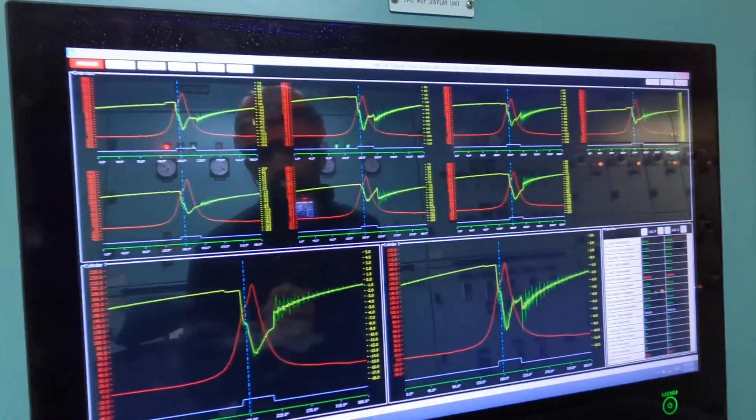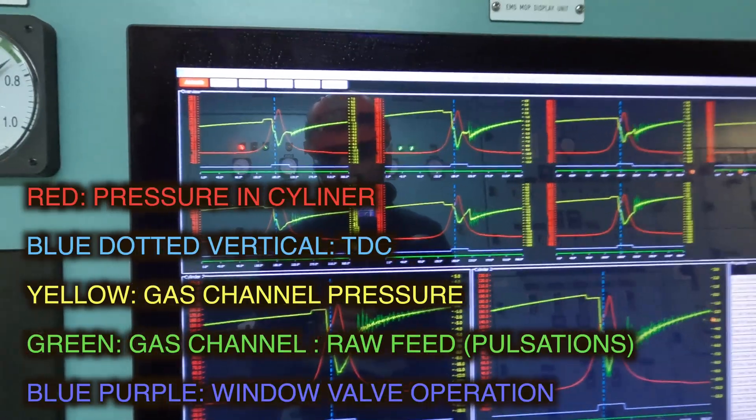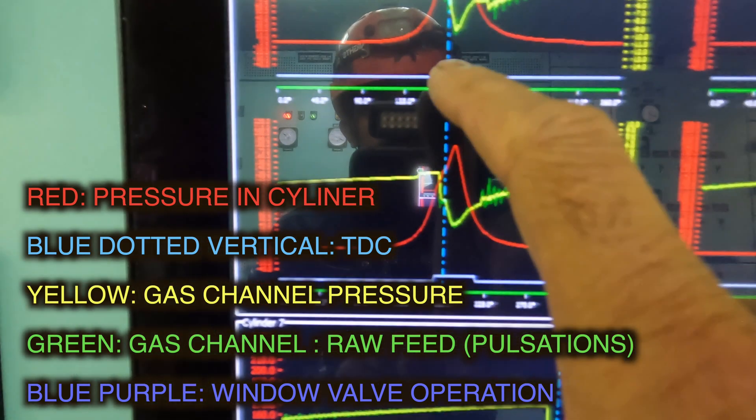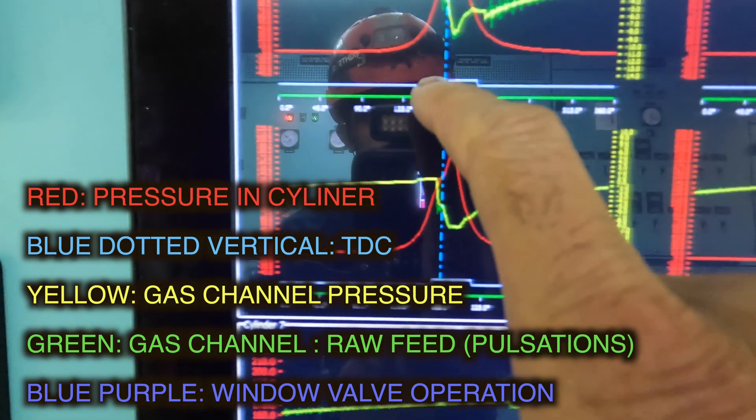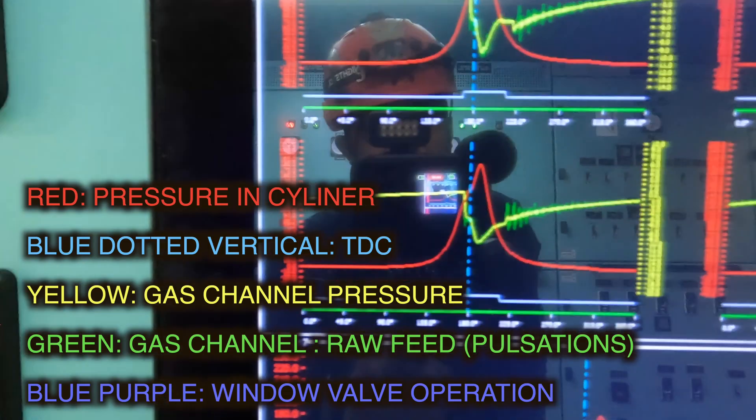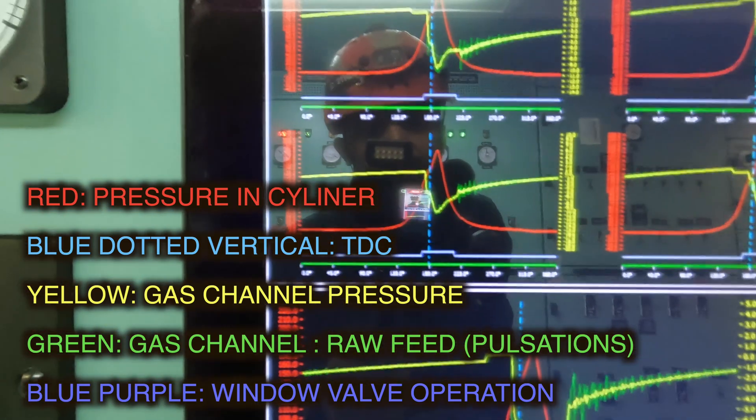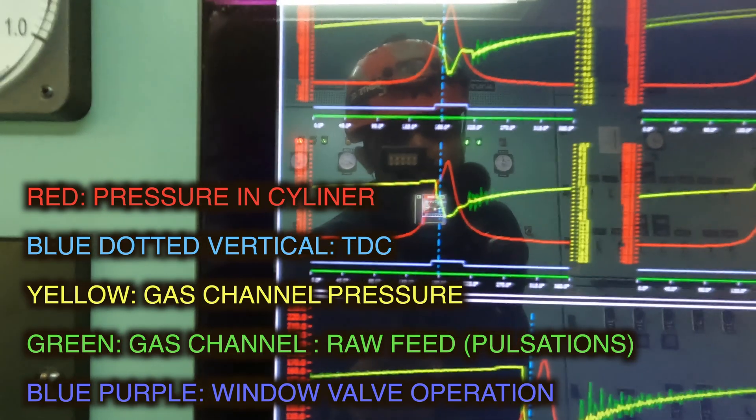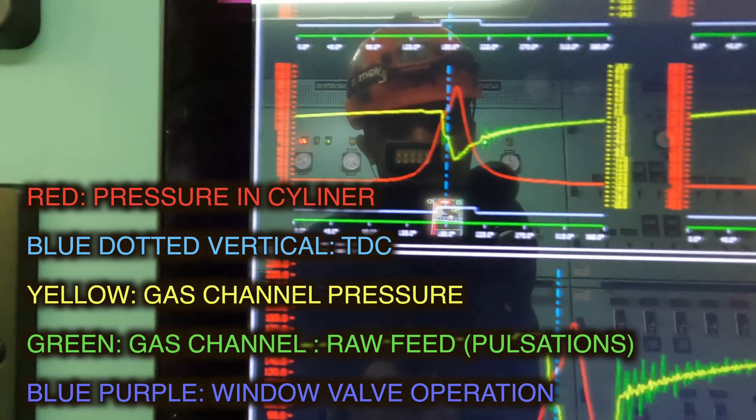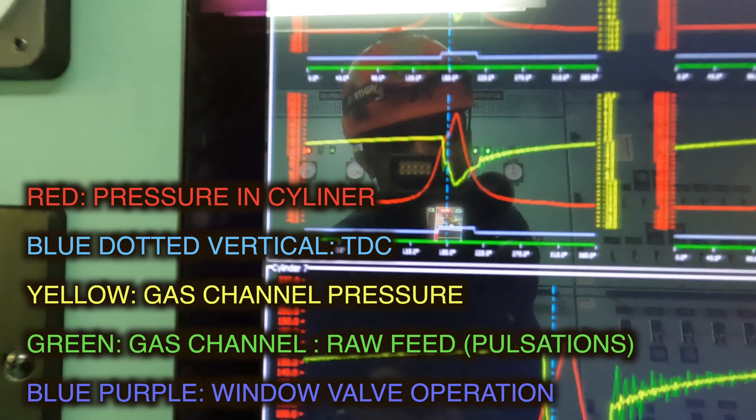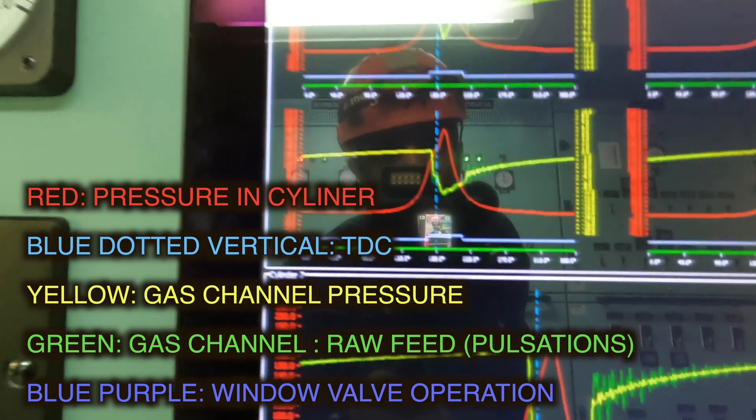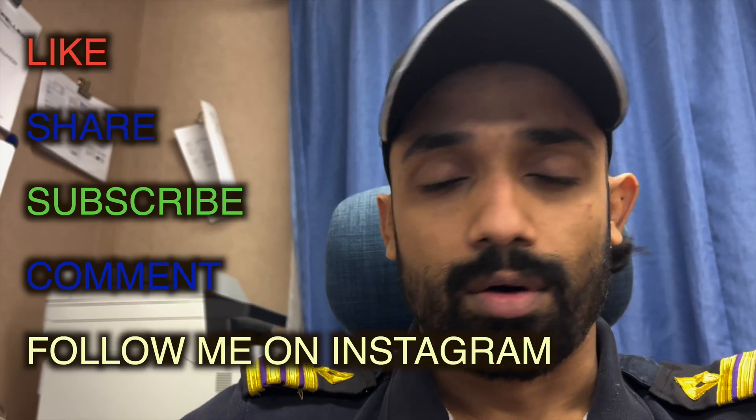Now back to the gas scope, the SF scope, second fuel scope. You can see each cylinder. The blue line below is something called window valve. So the window valve opens, I'll explain that function soon. So blue one is the window valve opening and closing, the yellow one is your gas channel pressure, the green are the fluctuations, and the red is your peak pressure inside your cylinder. The vertical dotted blue line, that's the TDC.